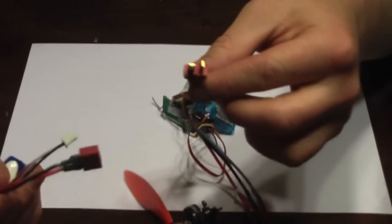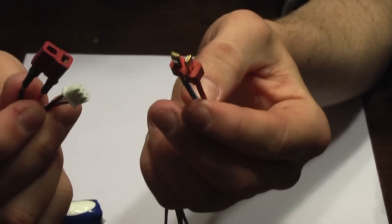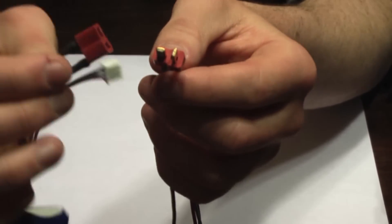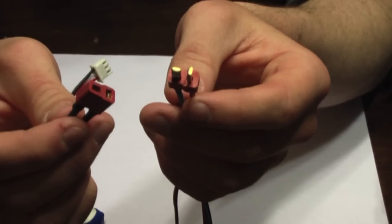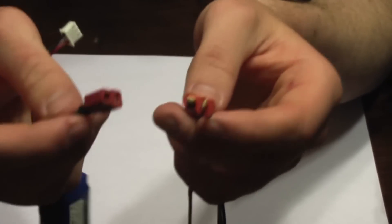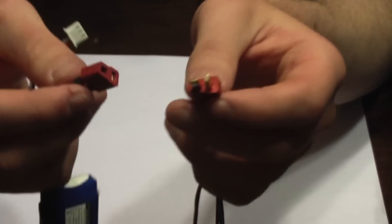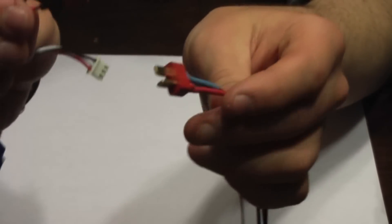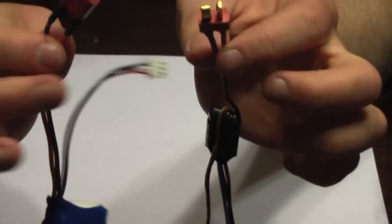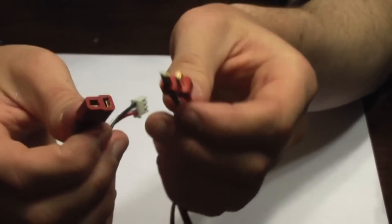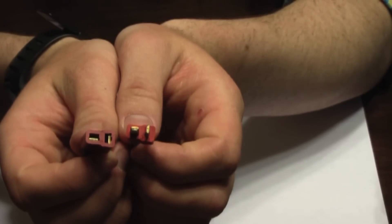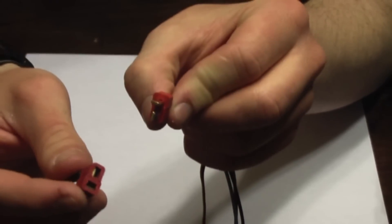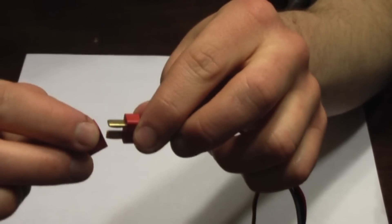So now I'm going to hook the ESC up to the battery using these red connectors here. These ones are called Dean's connectors, but there's lots of different kinds of connectors out there. I like Dean's, but a lot of people like these other things called XT-60s. So you want to make sure that you get the polarities matching up on these. You don't want to hook positive to negative or negative to positive. Dean's connectors are nice because you actually can't hook them up in the wrong direction because you've got a T-shape in both of them. So I'm going to hook this up.